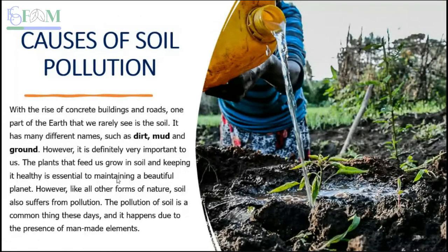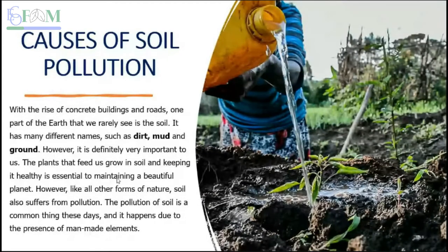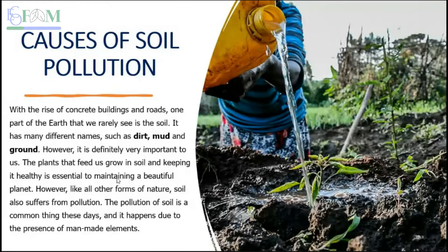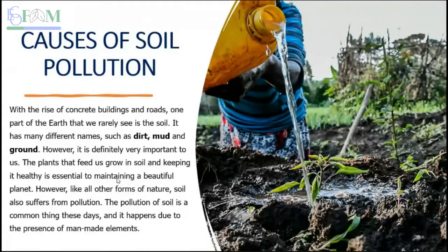Soil has physical, chemical, and biological properties. Its structure varies depending on location and the type of rock it formed from. Soil texture is based on the proportions of silt, sand, and clay — producing clay soil, loamy soil, or sandy soil. Because of soil pollution, these physical and chemical properties change over time.